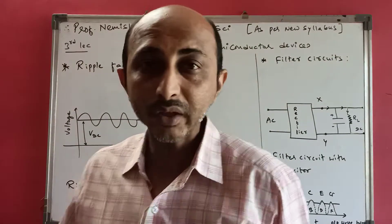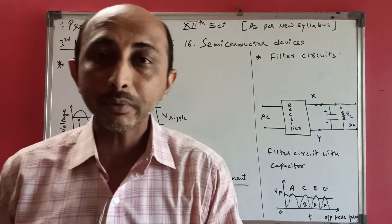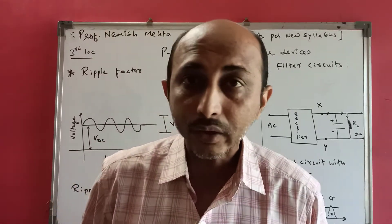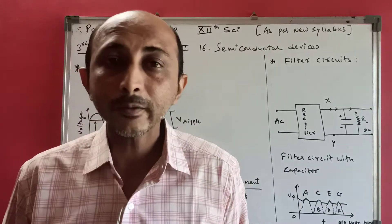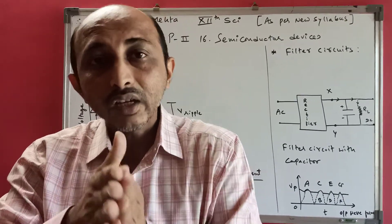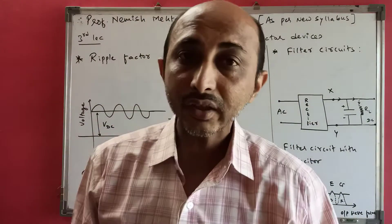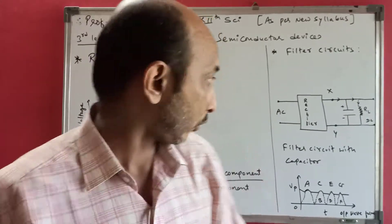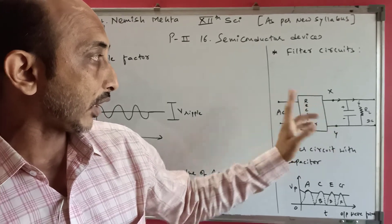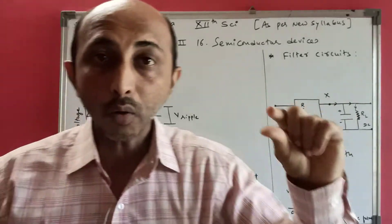Next is the filter circuit. The ripple factor tells us that some part of AC is not fully converted to DC. Because DC is unidirectional current, there will be fluctuations. To handle this, we use a filter circuit. A filter circuit uses a capacitor - the capacitor filters out the AC component from the DC output.